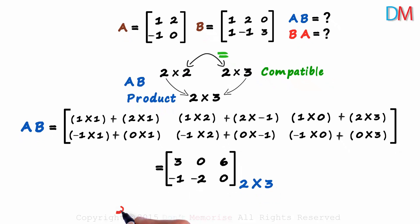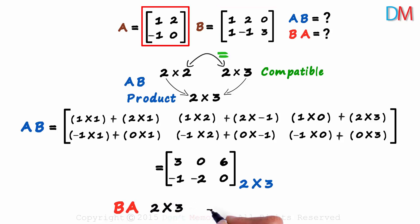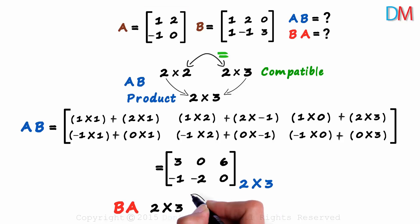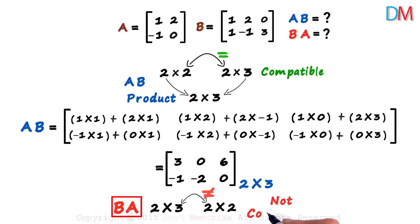Now let's try finding BA, where B is the first matrix and A is the second. Let's first check if they are compatible for multiplication. The order of B is two by three and the order of A is two by two. The second and the third numbers are not equal, so these two matrices are not compatible for multiplication.